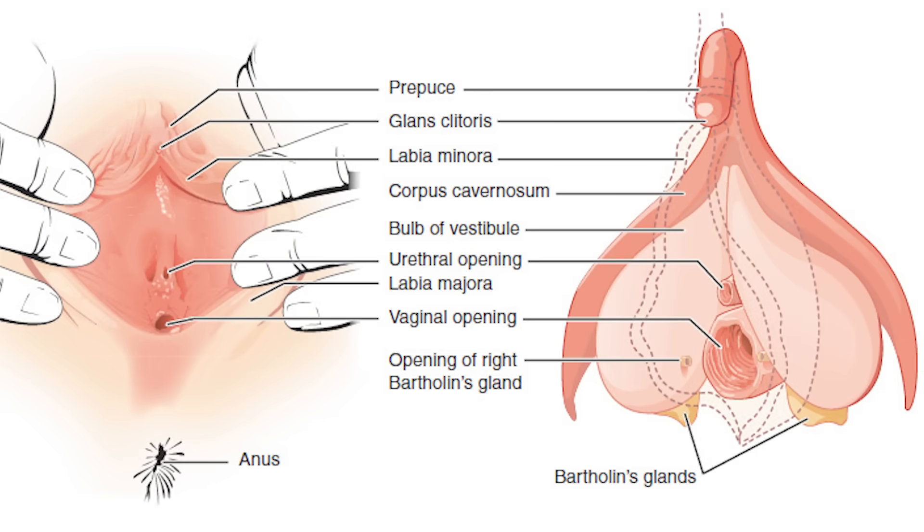Below the clitoris you can see the urethral opening — essentially the end of your pee tube, where your bladder empties urine. Below that is the vagina itself, which is a pretty amazing structure. It can change in shape significantly: during childbirth it can become large enough for the passage of a baby, and similarly during arousal it actually gets wider and up to three inches longer.